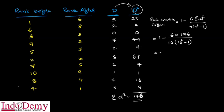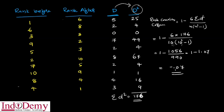We calculate: 1 minus 6 into 176, divided by 10 into 990. 10-squared is 100, 100 minus 1 is 99, and 99 into 10 is 990. This equals 1 minus 1.07, so the final value is equal to minus 0.07. The Spearman rank correlation coefficient is minus 0.07.